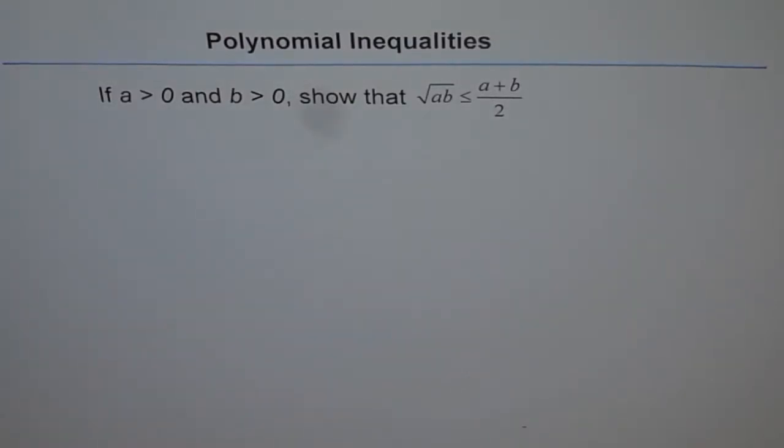Polynomial inequalities. If A is greater than 0 and B is greater than 0, show that square root of AB is less than or equal to A plus B divided by 2.